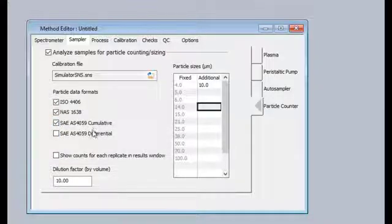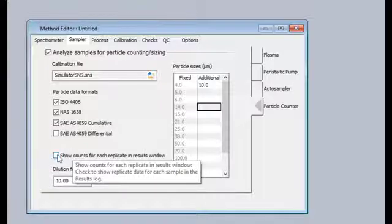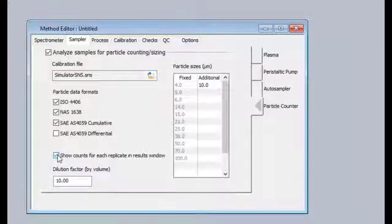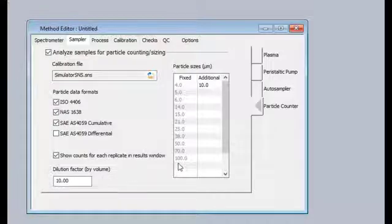The user can also have the individual replicates shown in the results window by selecting this option. A dilution factor must also be input for the results to be accurate. With the method saved and a sample information file created, we are ready for analysis.